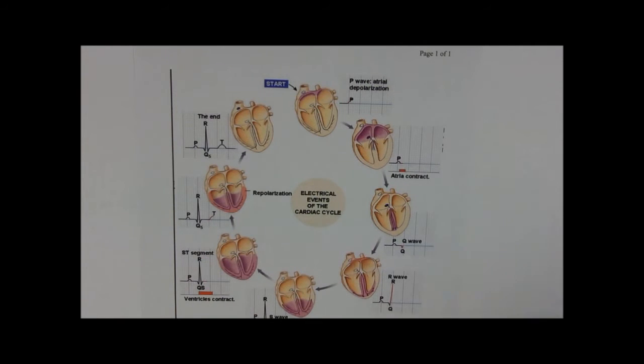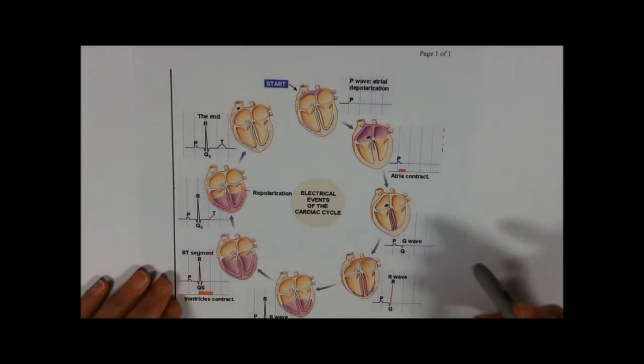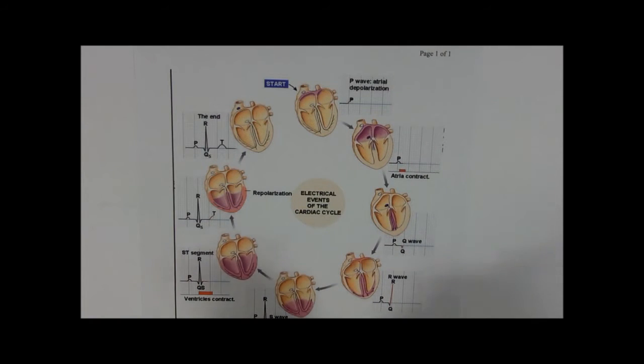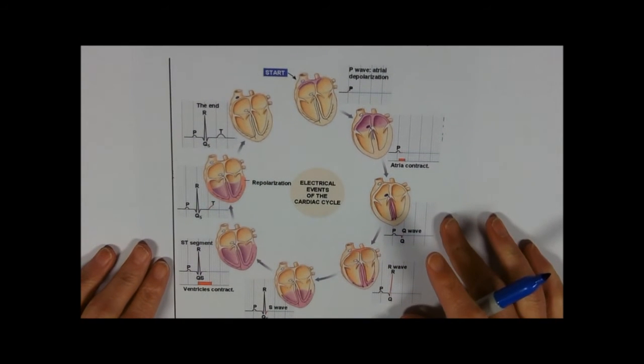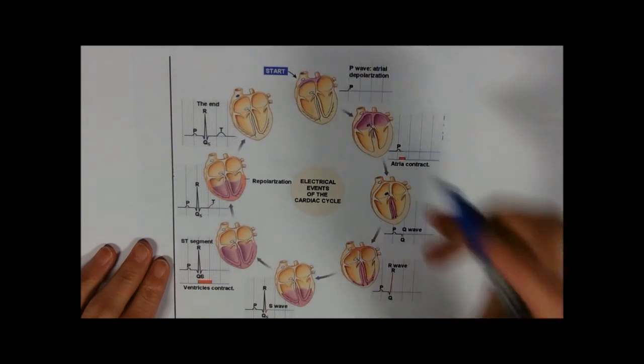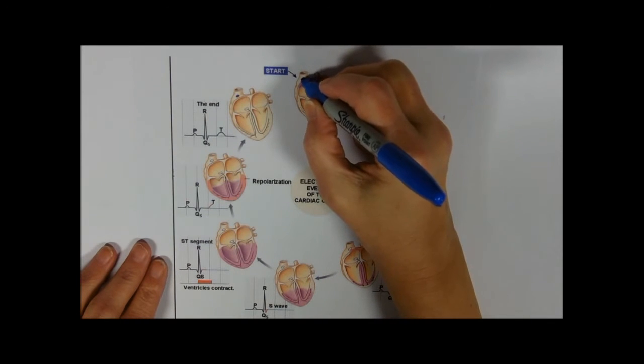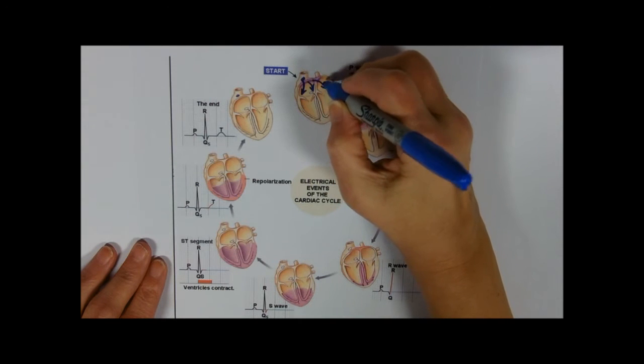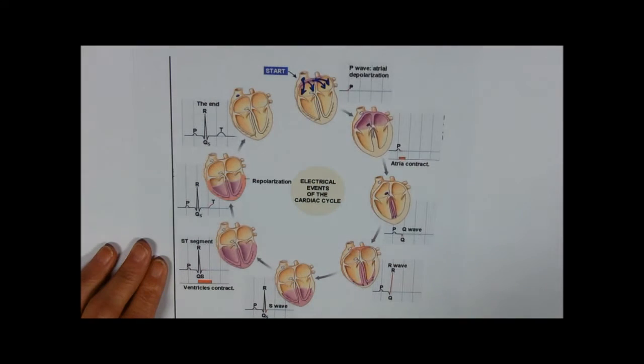So we talked in the cardiac cycle video about the sinoatrial node sending out this wave of excitation across both atria. I'll just color it in a brighter color because that's not completely clear. So the sinoatrial node here sending out a wave of excitation across both atria to cause atrial systole.